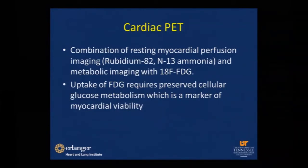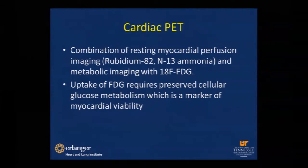The third modality is cardiac PET. Cardiac PET requires a combination of resting myocardial perfusion imaging using rubidium or N-13 ammonia, and metabolic imaging with FDG. FDG is a glucose analog — if a study shows FDG uptake into myocytes, it establishes that glucose metabolism is present in the myocyte, which can only happen in a living cell, because dead cells don't eat.